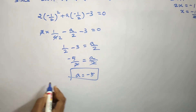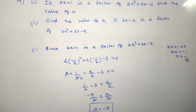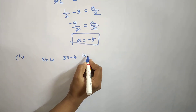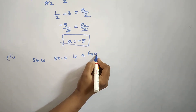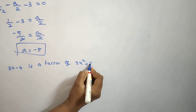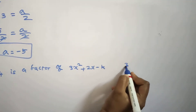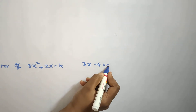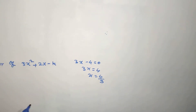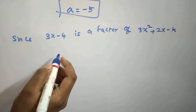In the second subdivision, since 3x minus 4 is a factor of the expression 3x squared plus 2x minus k, we need to find the value of k. Setting 3x minus 4 equal to 0 gives 3x equal to 4, so x is equal to 4 by 3. We substitute this value into the expression and set it equal to 0 since it is a factor.